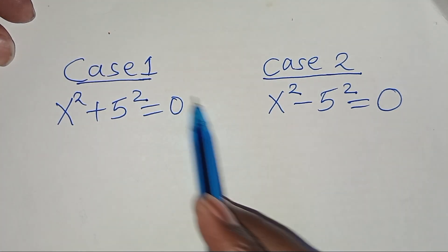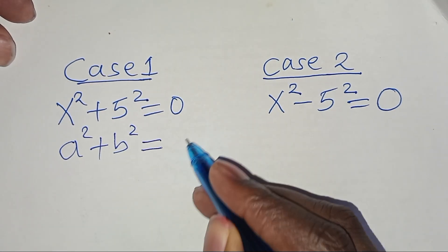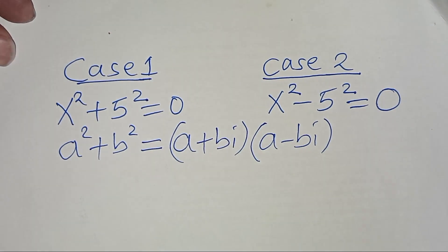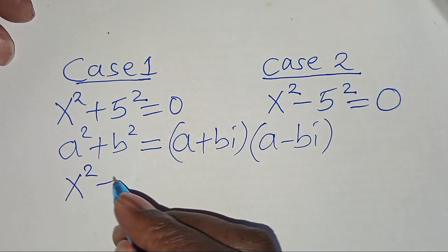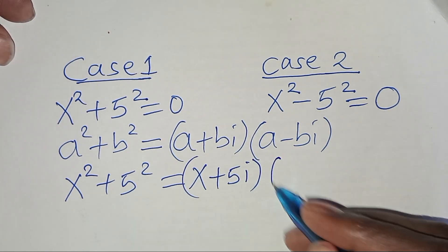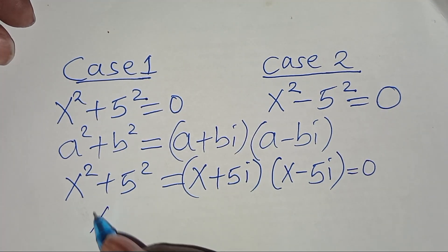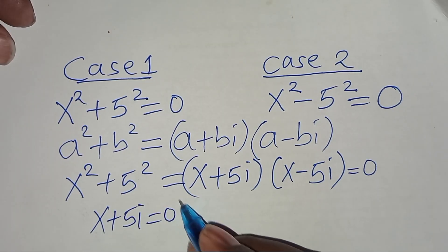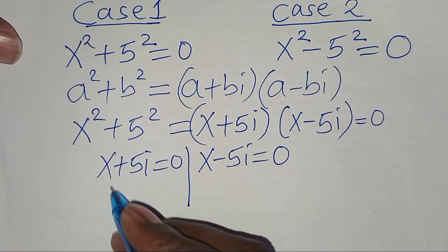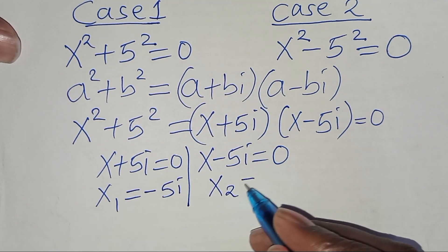Case 1: x squared plus 5 squared equals 0. This is in the form of a squared plus b squared, which we can express as (a plus bi)(a minus bi). So x squared plus 5 squared becomes x plus 5i and x subtract 5i, equal to 0. This gives us x plus 5i equals 0 and x minus 5i equals 0, so x₁ equals negative 5i and x₂ equals 5i.